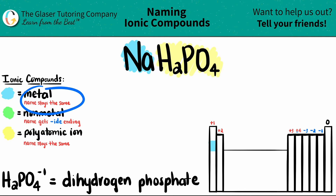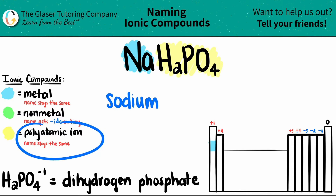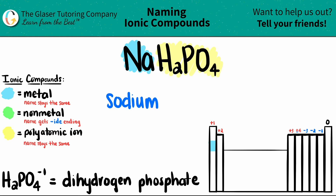The metal name always comes first and that name always stays the same. So Na, which is sodium — I'm just going to put sodium. And all polyatomics that you have, those names also stay the same. So since it was dihydrogen phosphate, that was the ion name by itself, this is going to be dihydrogen phosphate.